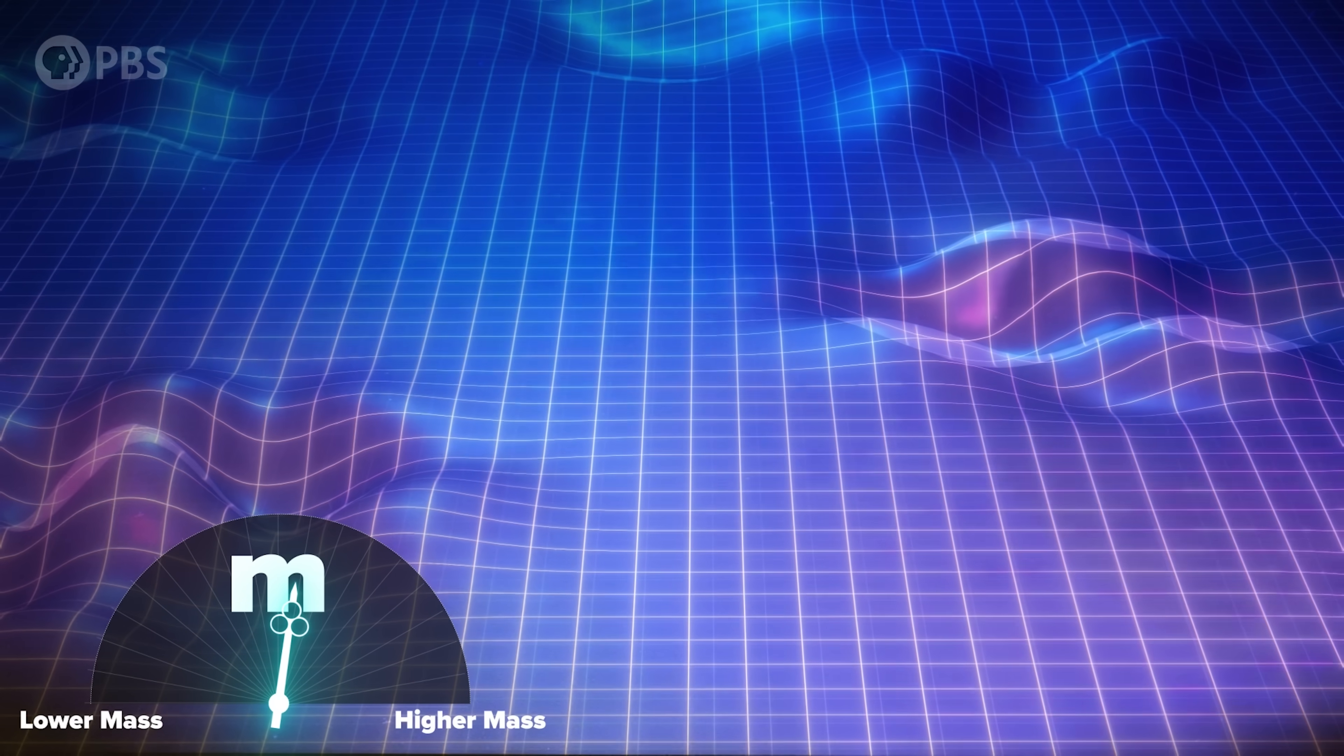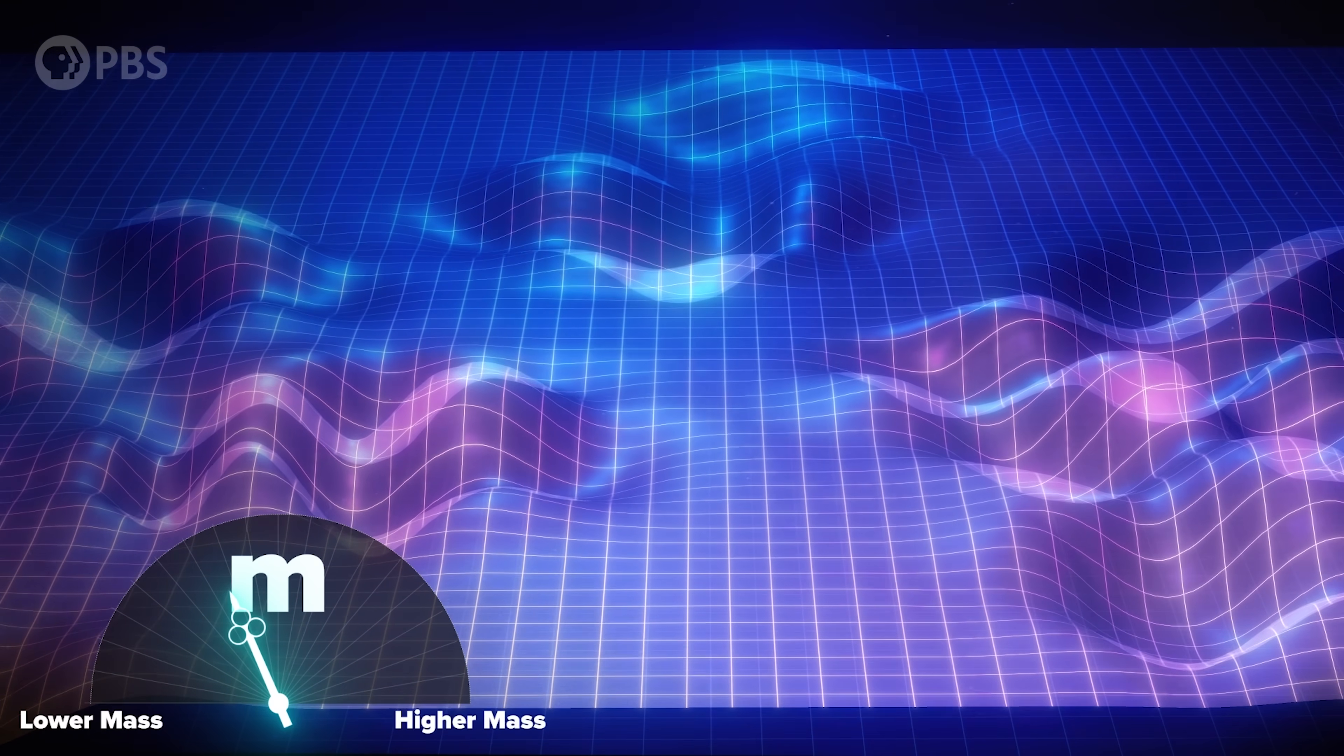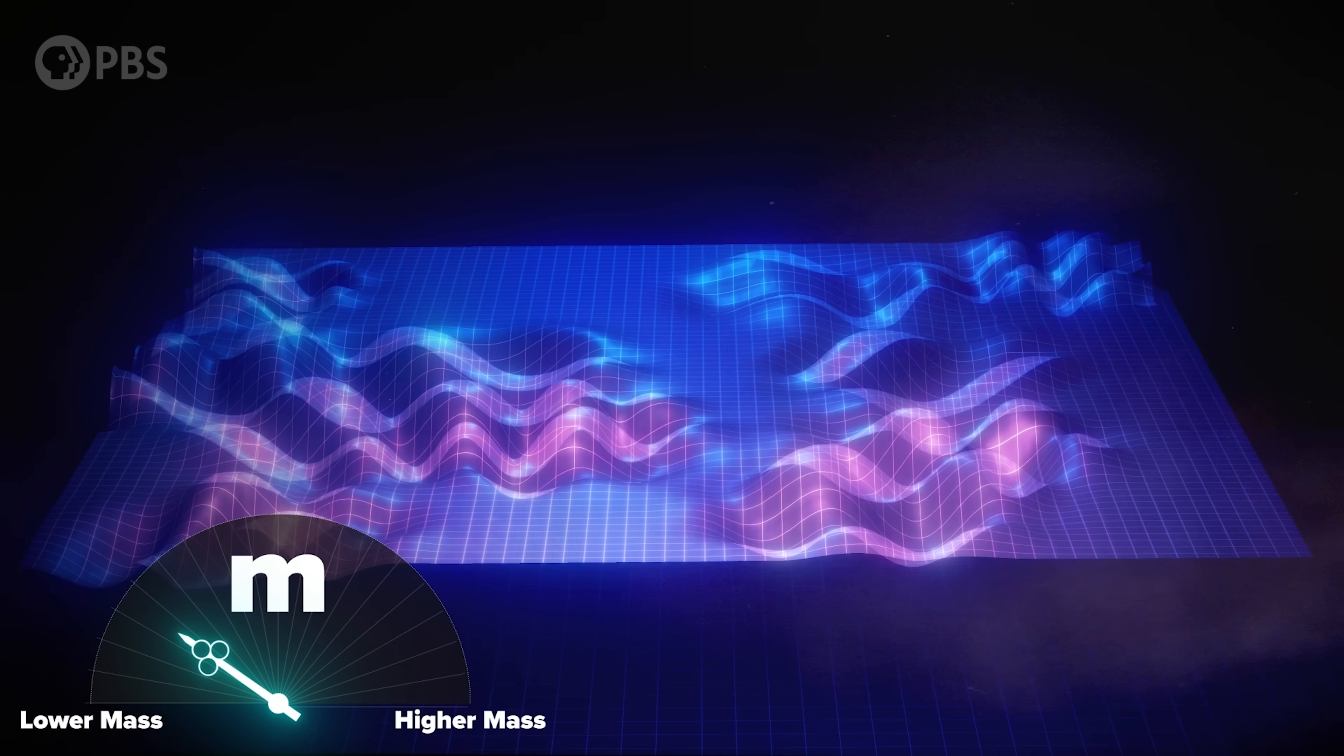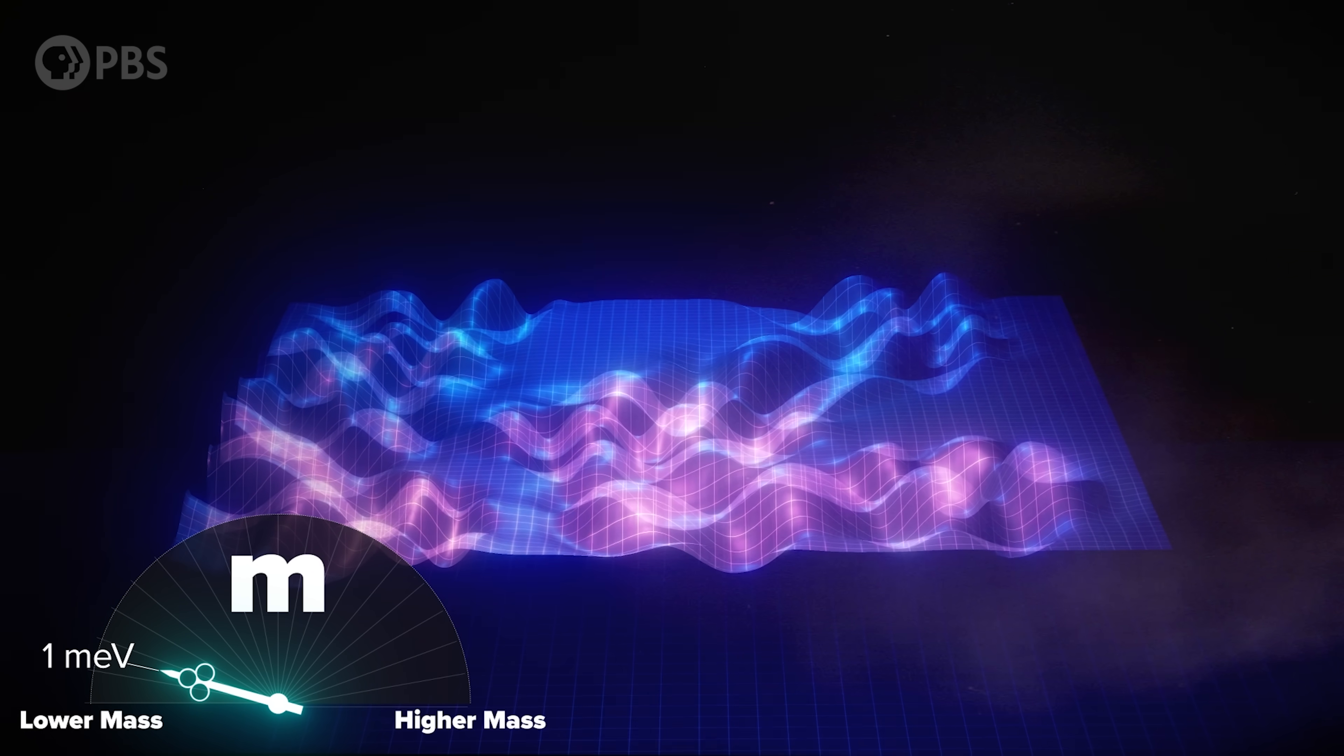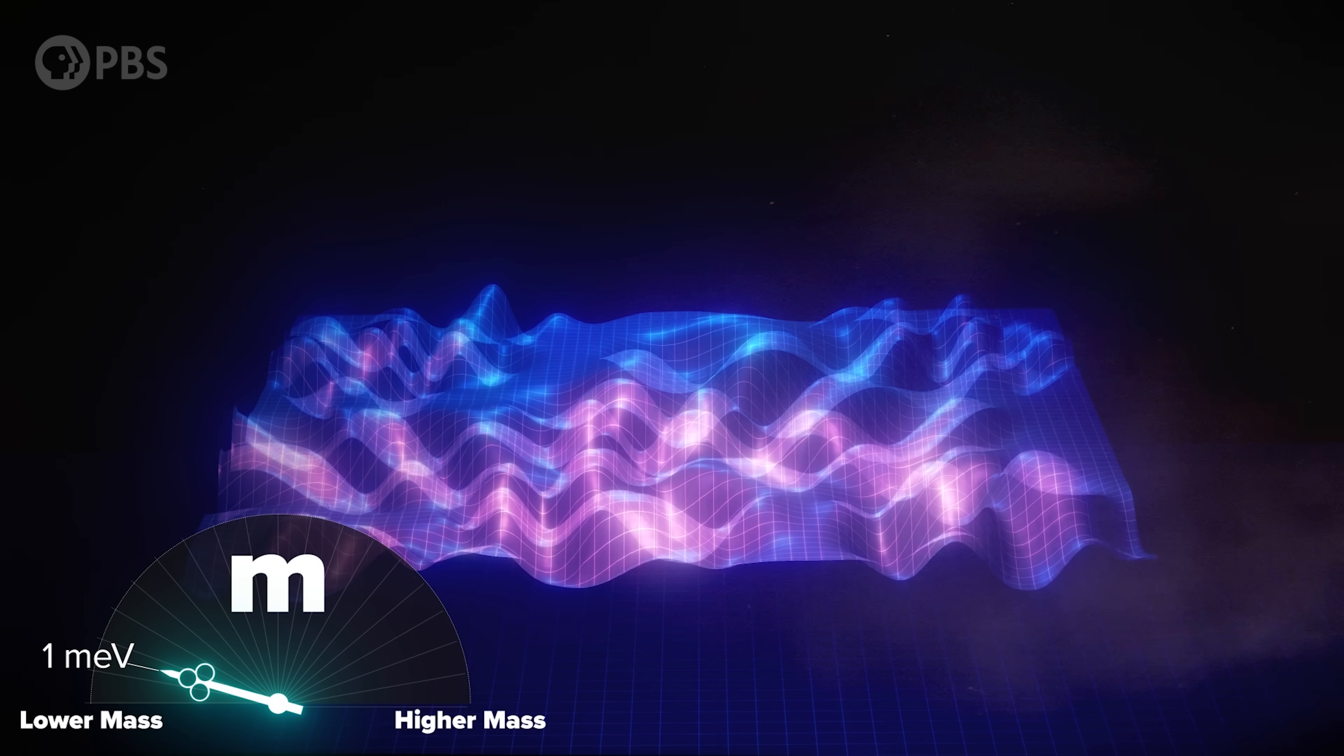Now imagine that we could tune the mass of these dark matter particles. The lower the mass, the more dark matter particles we need to produce the gravity that we observe out there. The particles end up closer together, but at the same time, their de Broglie wavelengths increase. Once the mass drops to a milli-electron volt or so, around the millionth that of an electron, we start to run into some interesting effects. If these particles are slow moving, as expected for cold dark matter, then their de Broglie wavelengths are around the same as their separation. The quantum wave functions of the particles start to overlap. Now we're really in the realm of quantum mechanics.